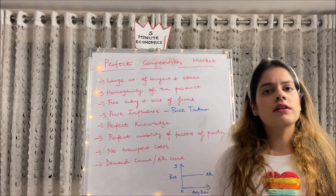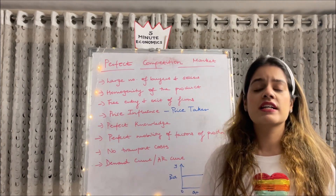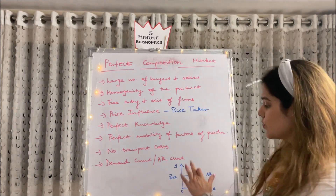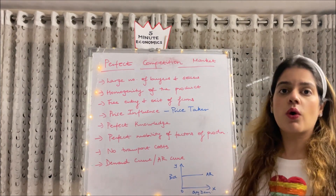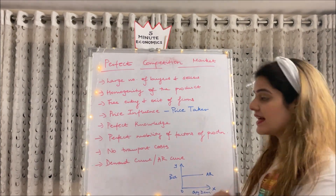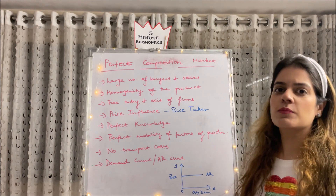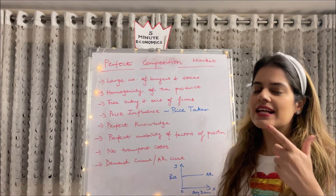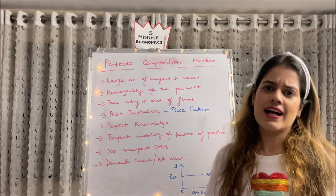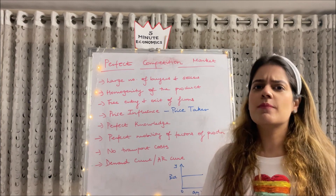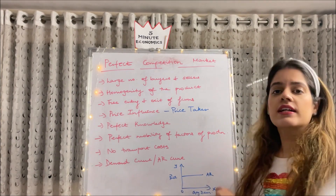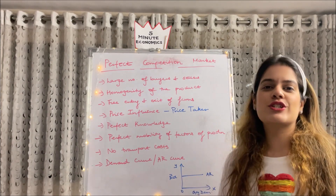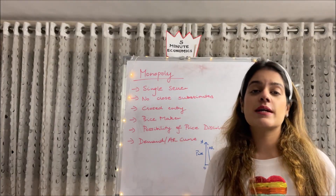Lastly, the demand curve for a perfectly competitive market is perfectly elastic. The average revenue (AR) or demand curve is a straight horizontal line parallel to the x-axis. Everyone is willing to sell at a particular price, but not at any slightly higher price — since everyone is selling the same product, buyers won't pay more. That's why the demand curve is a horizontal straight line. These are all the features of a perfectly competitive market.